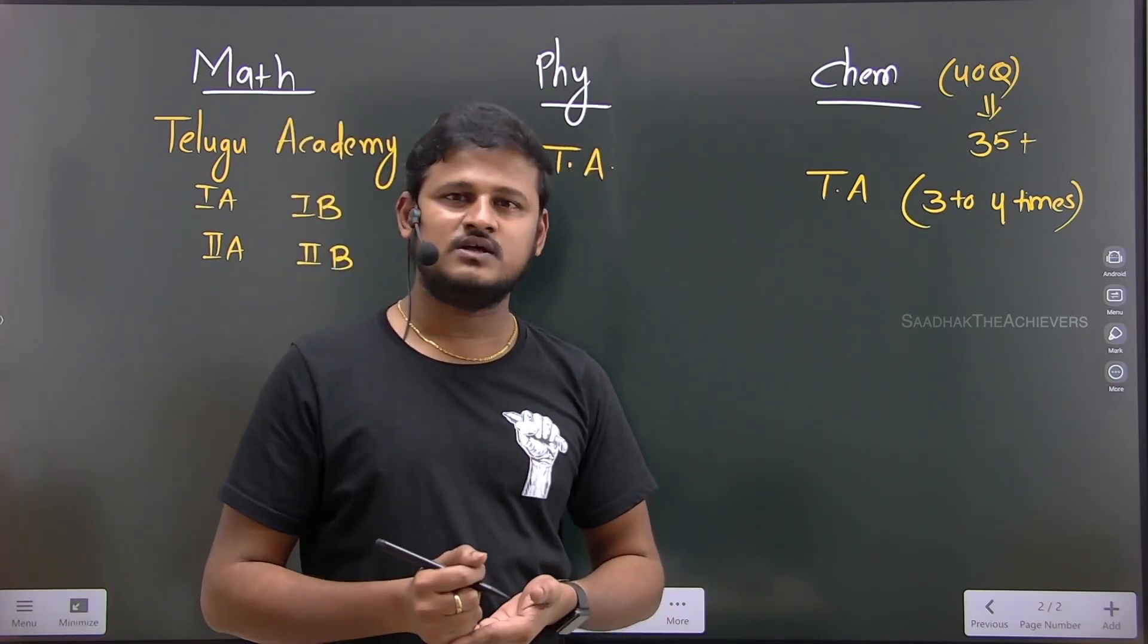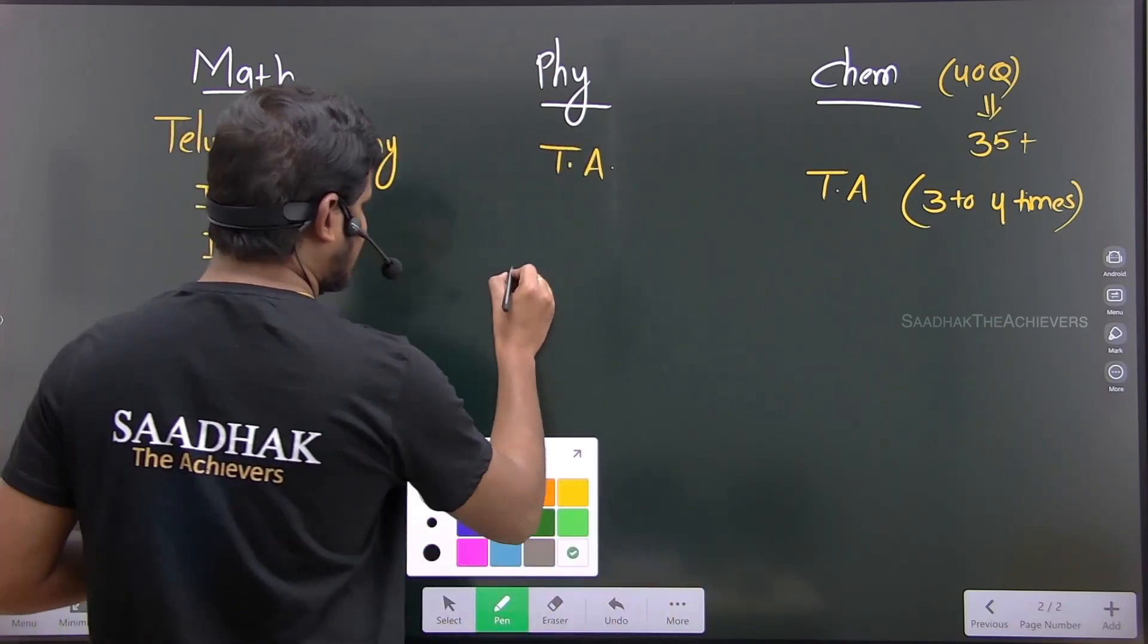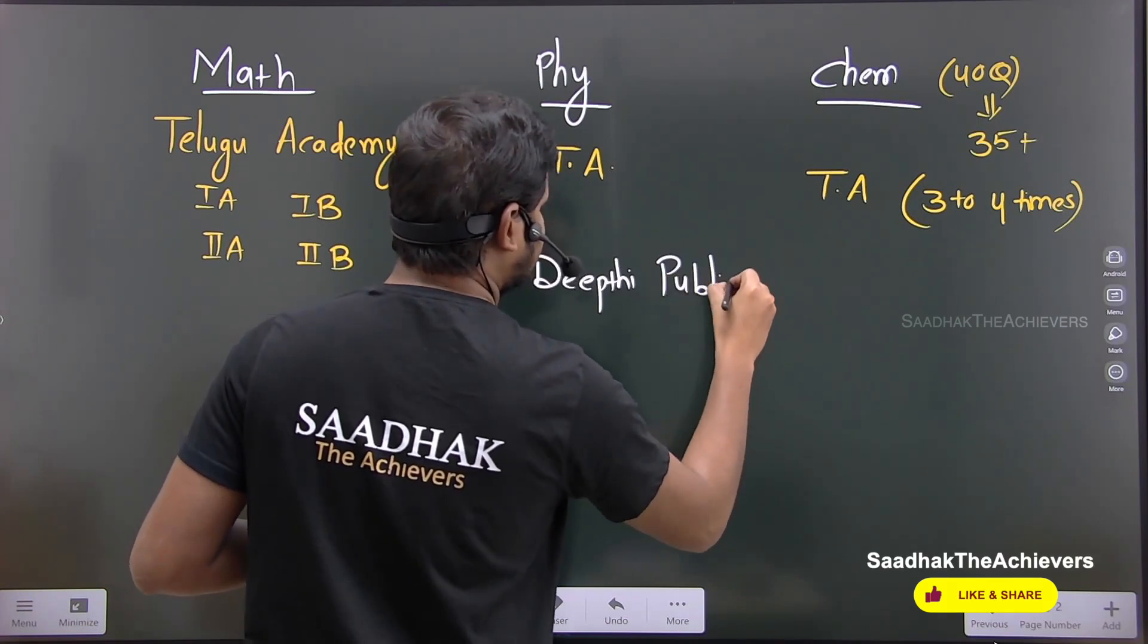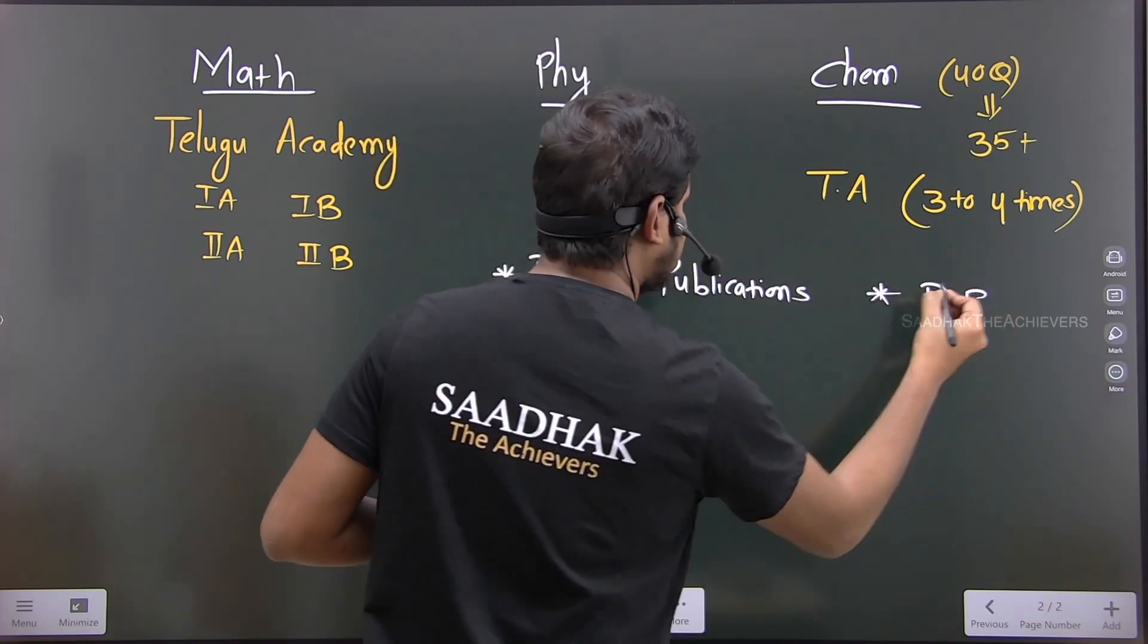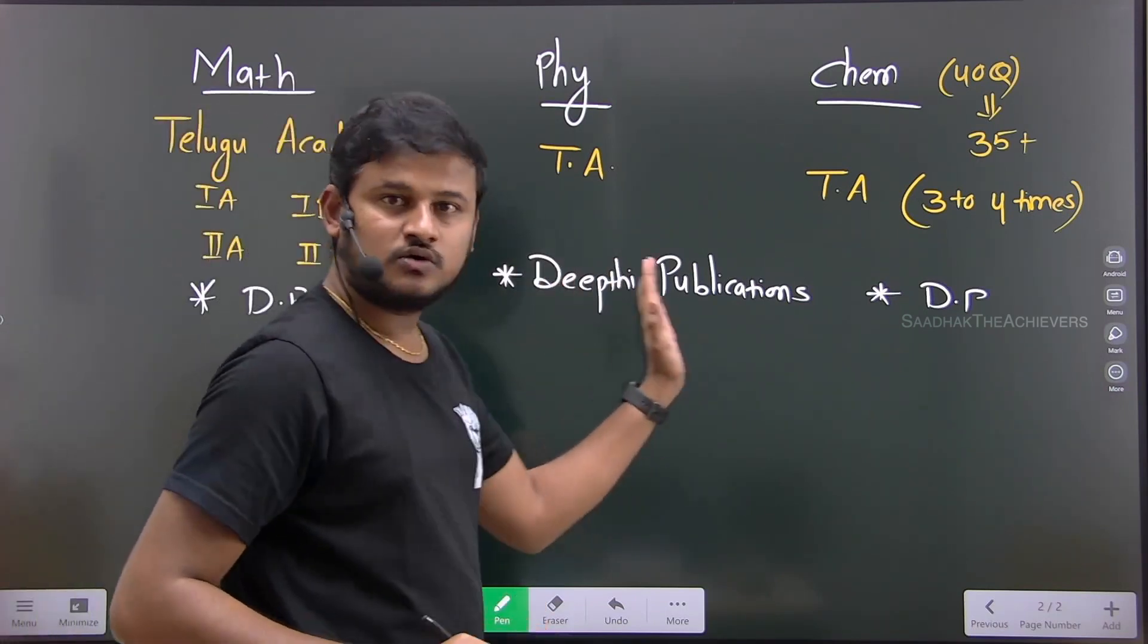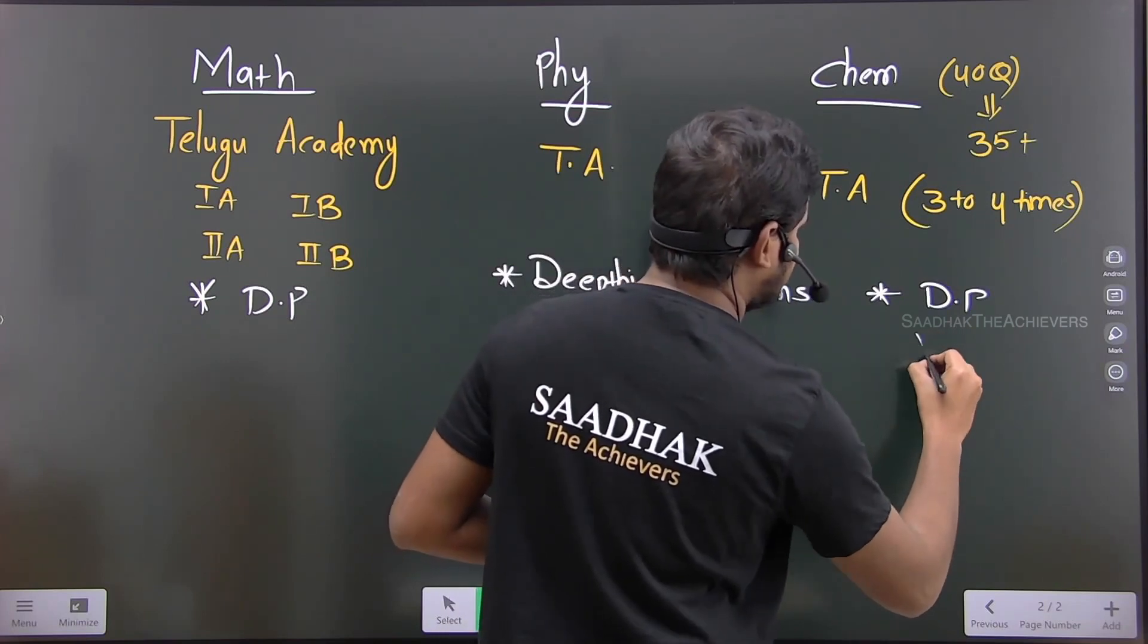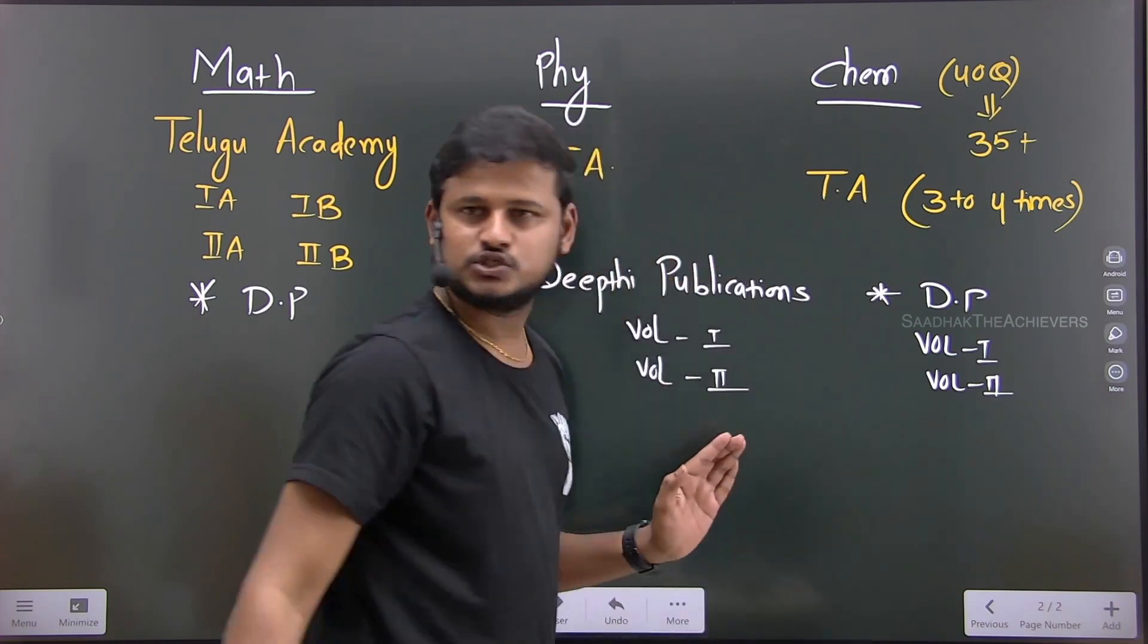You can opt for Deepti Publications, the Deepti Publications Rank Series book. Even for chemistry, the book is Deepti Publications. Even for maths you can get separate - first year volume 1, second year volume 2. Same for chemistry as well. Volume 1 is for first year, volume 2 is for second year. You can see a sample here.